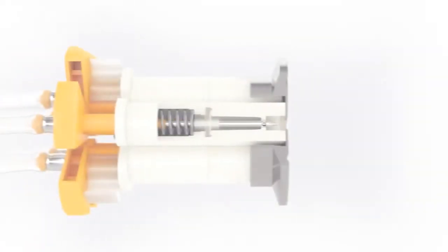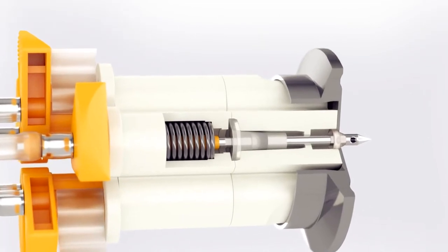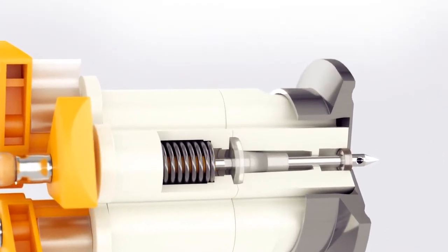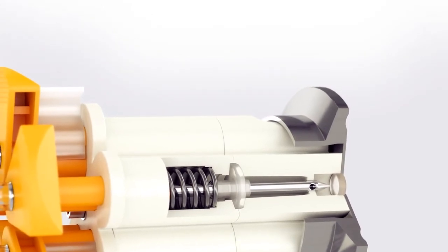For sampling, the cannula is pressed through the silicone septum. This stretches the silicone seal inside the system, which is attached to the cannula. As a result, the aseptic chamber remains closed.